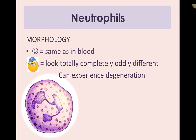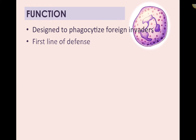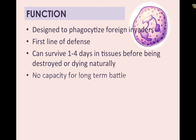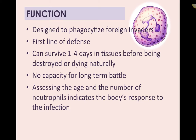If neutrophils are sick, wounded, or battling, they start to look completely different from how they appear in the peripheral bloodstream — they can be extremely mind-boggling when you're first learning about them. Practice makes perfect and it takes a while to recognize degenerative neutrophils. Their function is to be the first line of defense — they seek out and destroy, phagocytizing foreign invaders, and they can survive one to four days in tissues before dying.